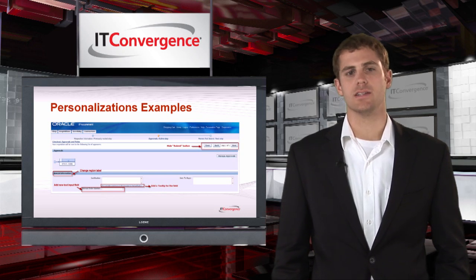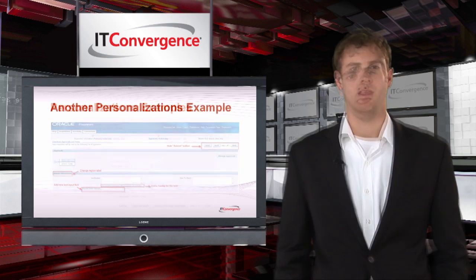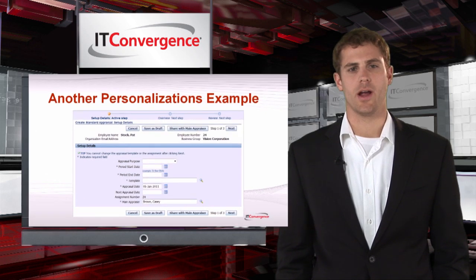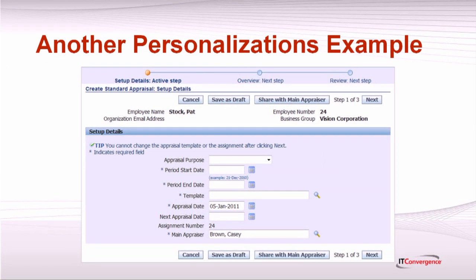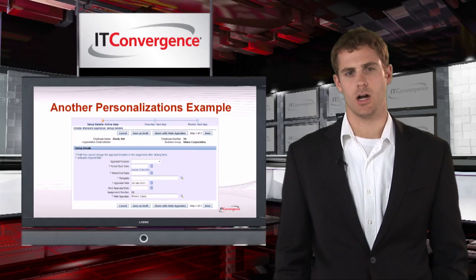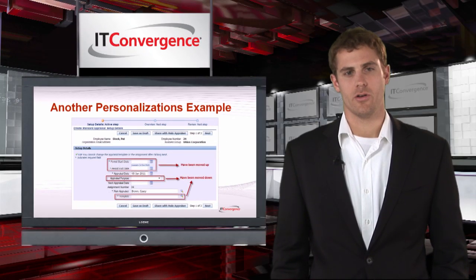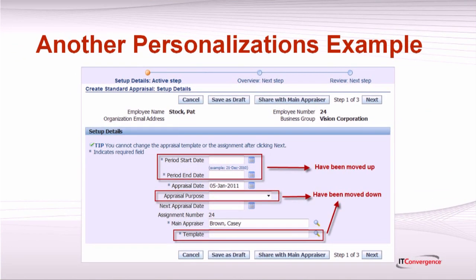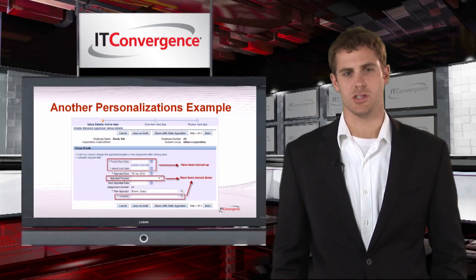And how about reorganizing the existing fields on the screen? Here's the Create Standard Appraisal Setup Details page. This is the first step in the Create Appraisal process in the Self Service for Employees module. We changed the order of the items and now the Period Start Date and Period End Date fields have been moved up, while the Appraisal Purpose and Template fields have moved down. These are only a few examples of small changes that have been done via OAF personalizations.